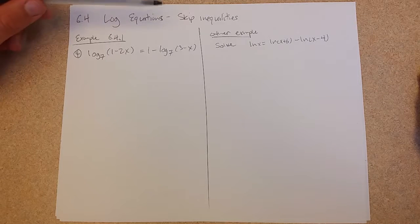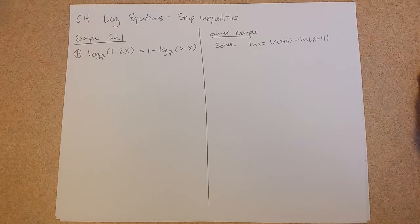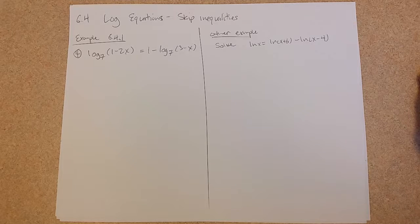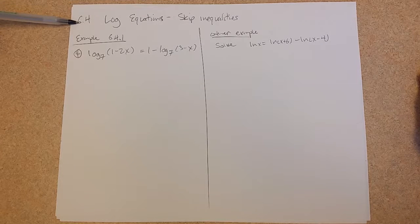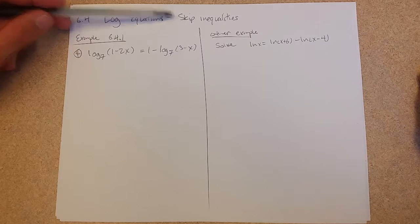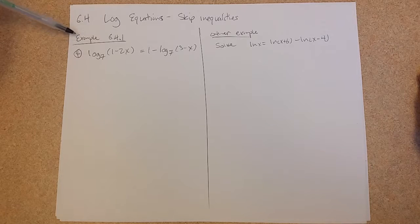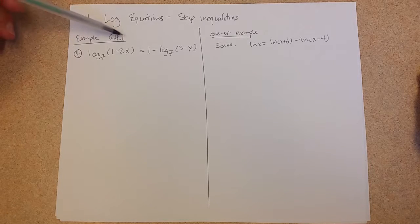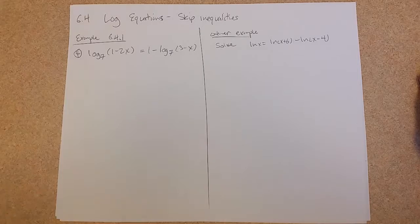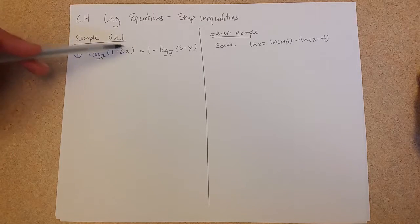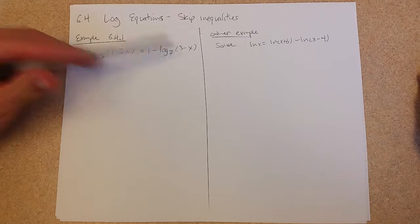Now for log equations, 6.4 is logarithmic equations. We're skipping inequalities. First example, right from the book, 6.4.1, number 4, we have log base 7 of 1 minus 2x equals 1 minus log base 7 of 3 minus x.